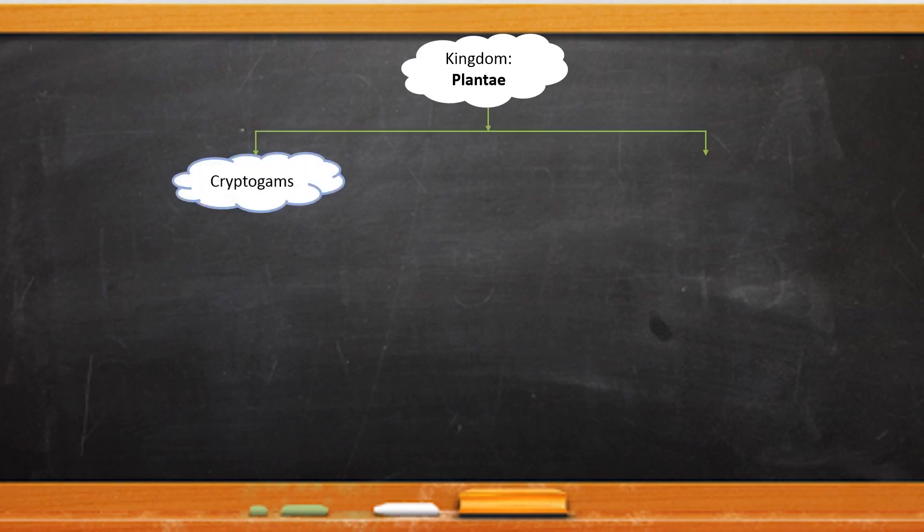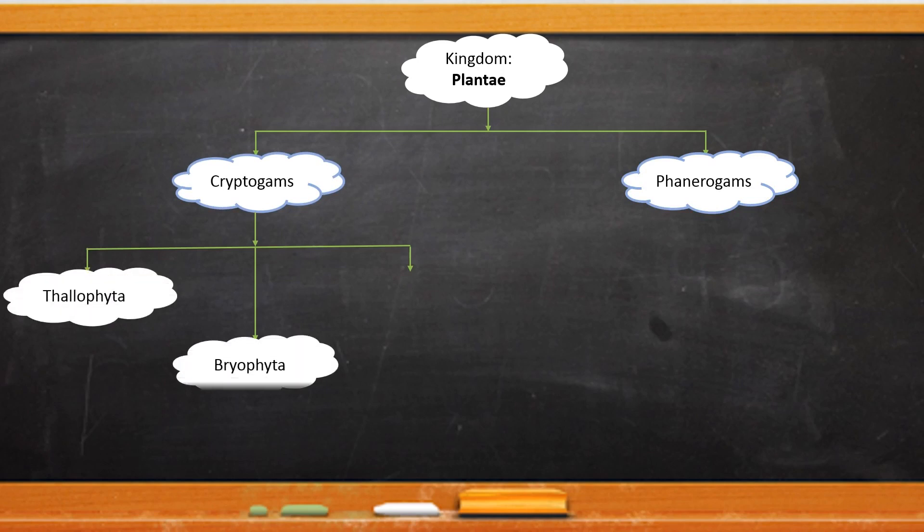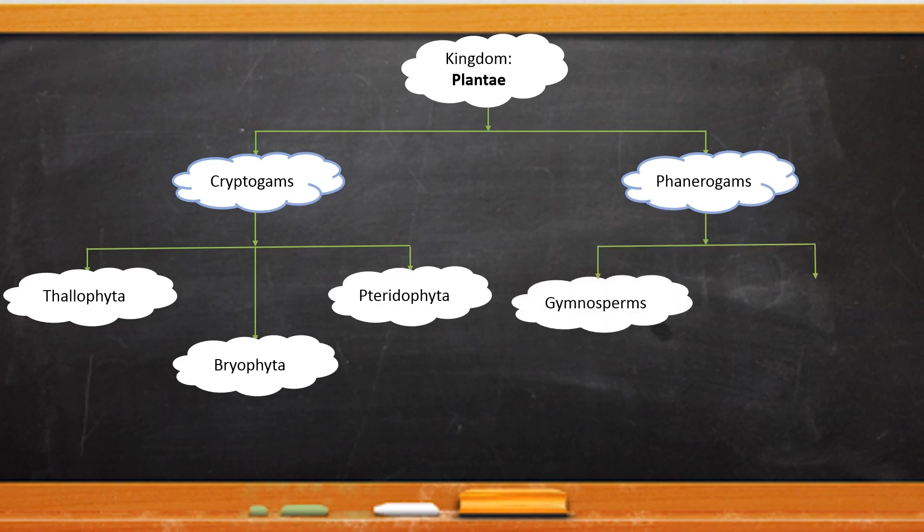With this point, we have come to the end of this chapter. We have learnt the following points: Kingdom plantae is divided into two sub-kingdoms, that is cryptogames and phanerogames. The cryptogames are further divided into three divisions: thallophyta, bryophyta and pteridophyta. Phanerogames are divided into two divisions: gymnosperms and angiosperms. Angiosperms are divided into two groups: dicotyledon and monocotyledon.